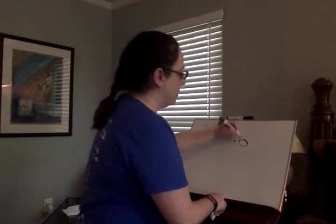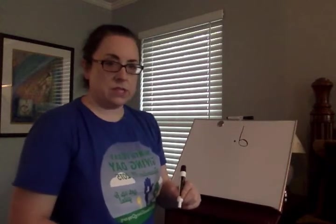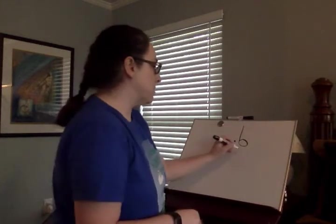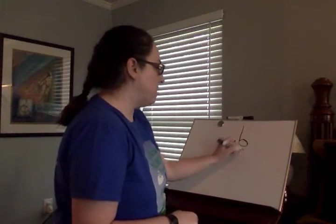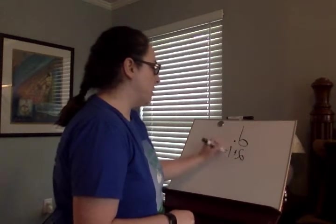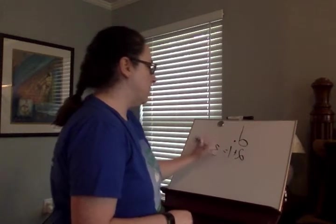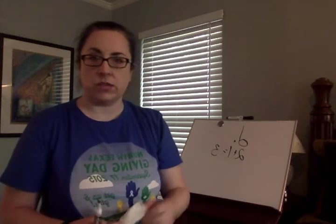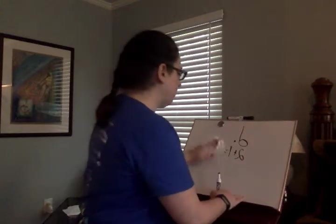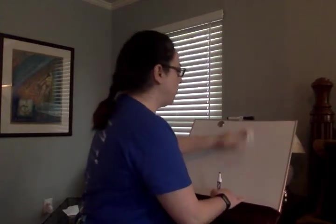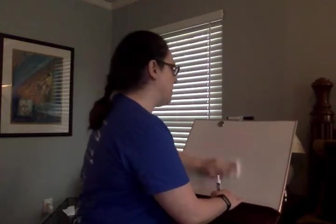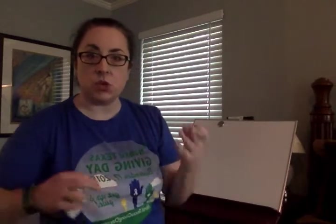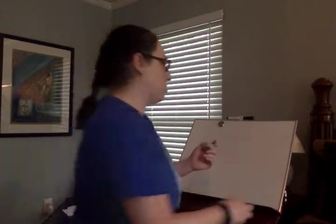So if we dot a half note, that's where we get our three counts — because a half note is two counts and half of two is one. So a dotted half note gets three counts. In 4/4 time, you can see a dotted half note at the beginning of the measure or the end of the measure.